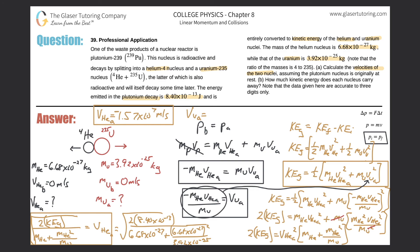So plugging into the formula: the velocity of uranium after the decay equals negative 6.68 times 10 to the minus 27, multiplied by negative 1.57 times 10 to the seventh, divided by the mass of uranium, 3.92 times 10 to the minus 25. Here we get a value of 2.68 times 10 to the fifth meters per second. That is the velocity of uranium. That takes care of letter A.